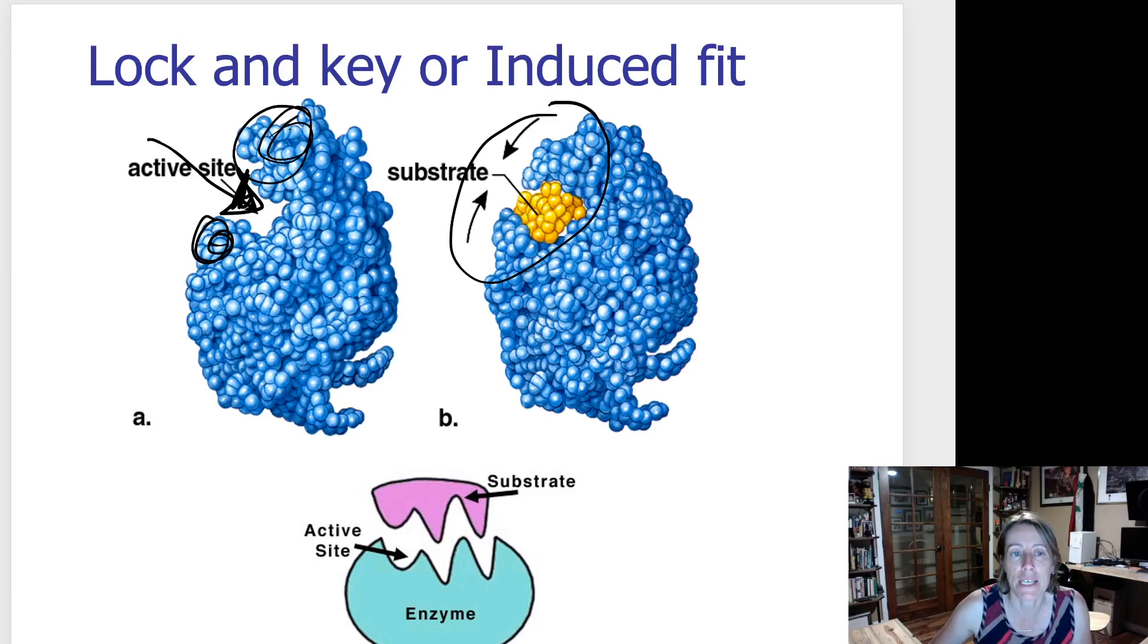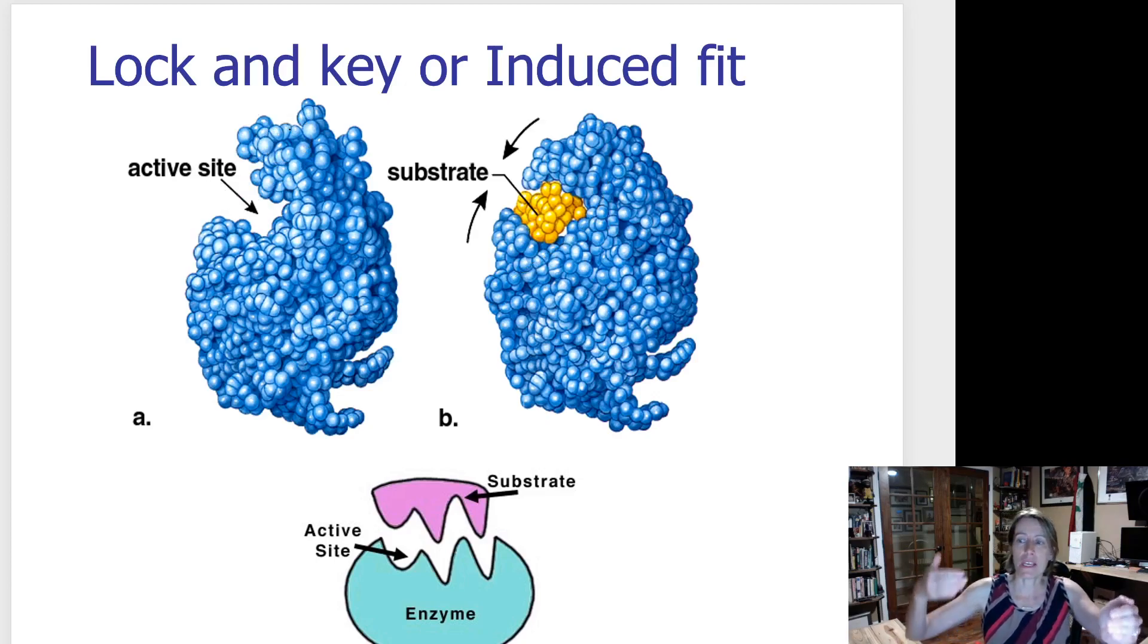The best analogy I can give you is we used to think of this as a lock and key where the key just slides in and pulls out and there's not really a lot of change going on. Now I think a better idea or a more up-to-date idea of how this happens is the idea of a glove and a hand.